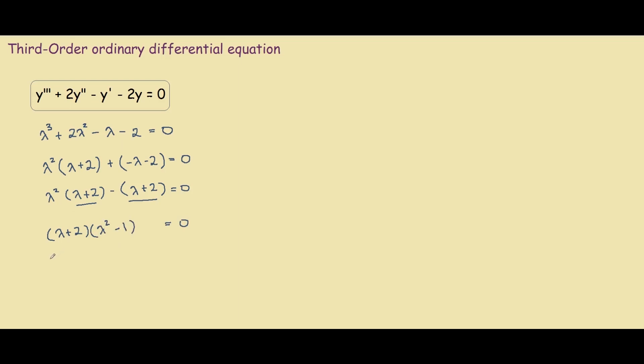So now the last step to factorizing this is to transform the lambda squared minus 1 to lambda plus 1 times lambda minus 1. And this will give you your solution that lambda equals to negative 2, negative 1, and 1.